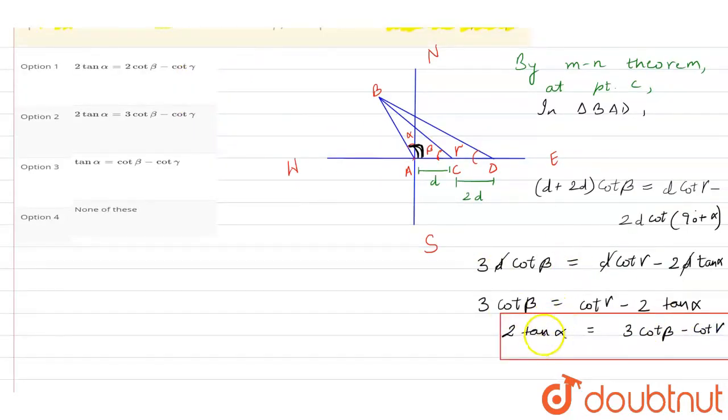Now, let us match this answer with the option. So it says 2 tan alpha equals 3 cot beta minus cot gamma. So option 2 will be the right option.